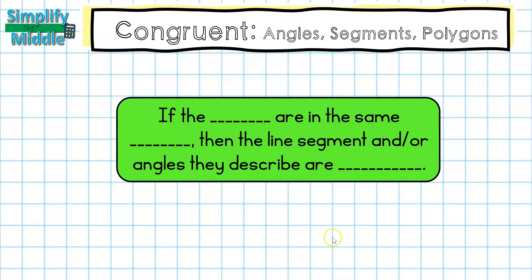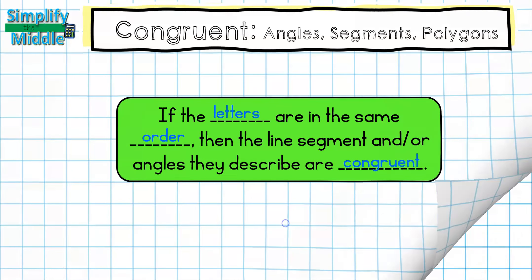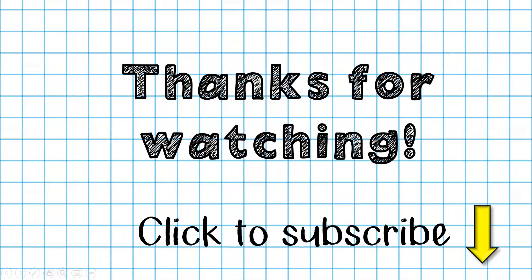Let's recap: if the letters are in the same order, then the line segments and angles they describe are congruent. Just make sure you are looking at those hatch marks and angle curves. That wraps up our video — thanks so much for watching, and feel free to click to subscribe for this and other lessons.